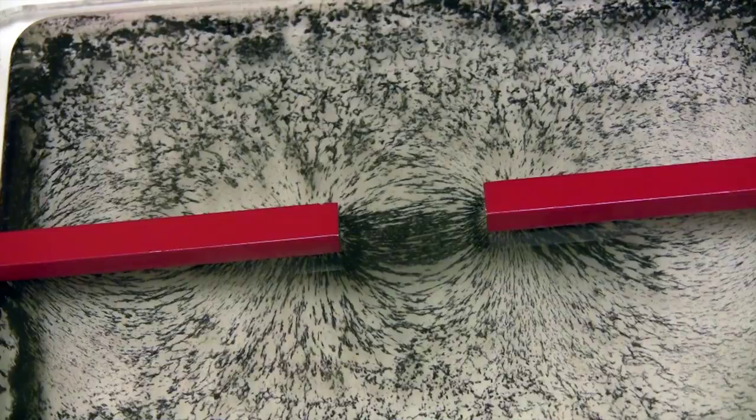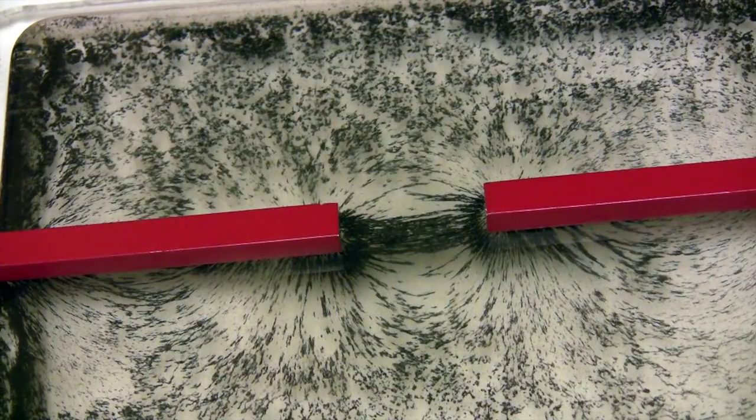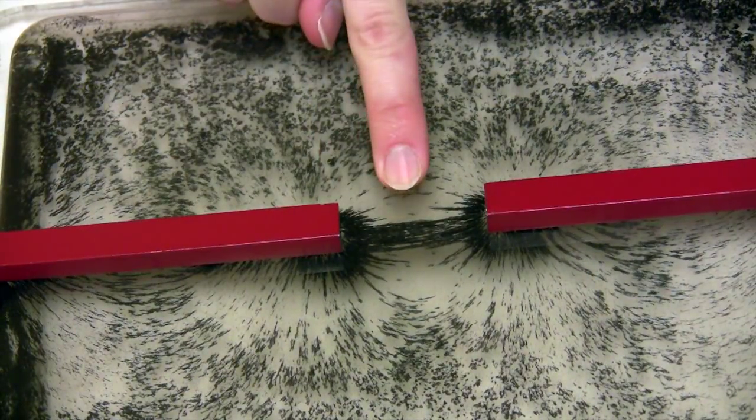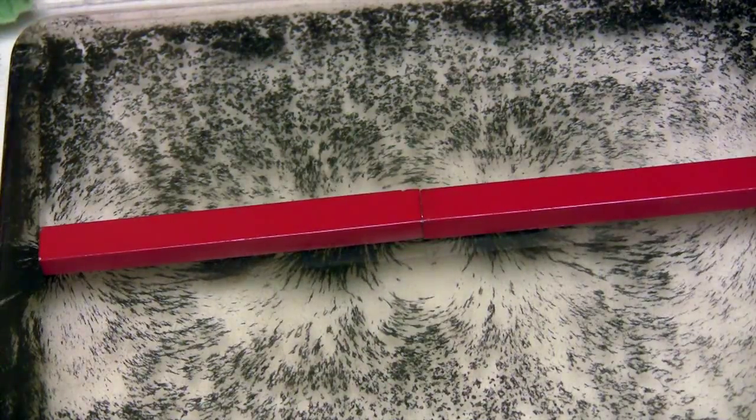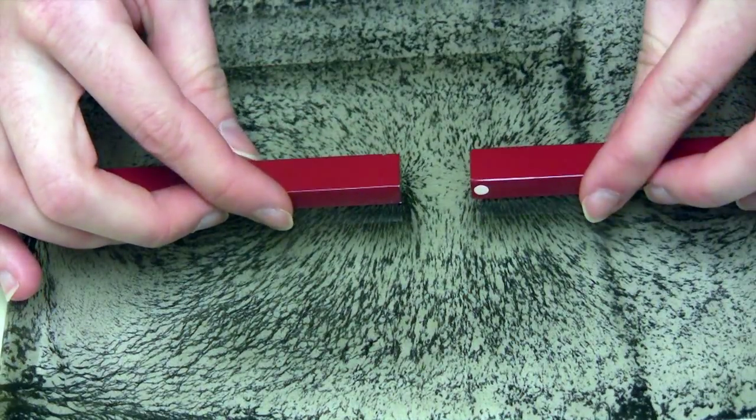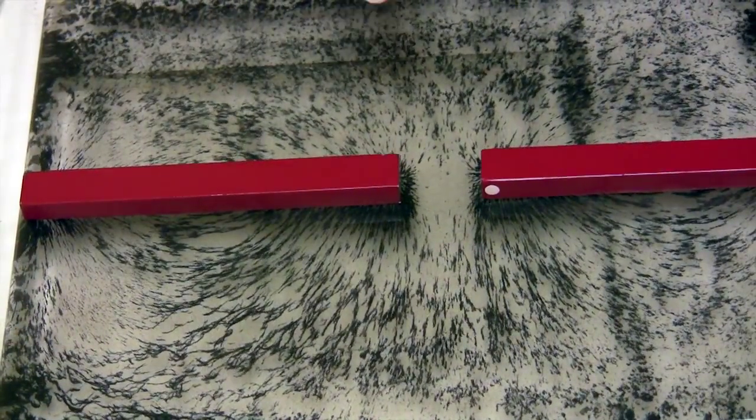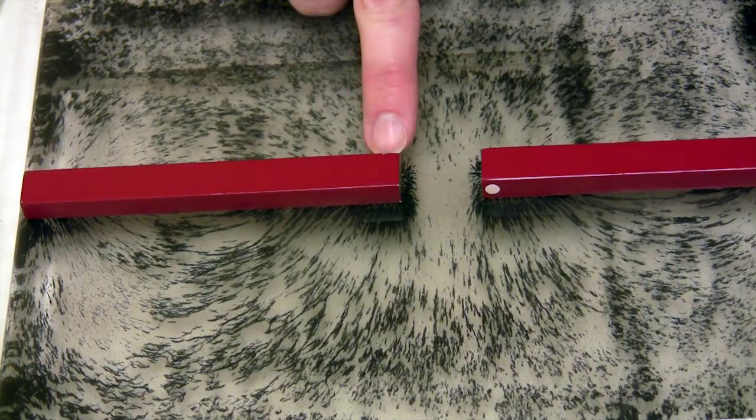When opposite poles of a magnet are brought together, the lines of force join up and the magnets pull together. When like poles are brought together, the lines of force push away from each other and the magnets repel.